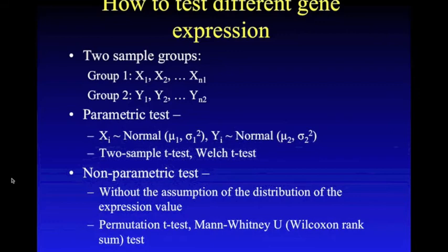After obtaining the microarray data, how can we tell whether two genes' expression levels are different or not? Here, I'll introduce four significance tests that might help solve this problem. Suppose that there are two sample groups, x and y. The tests can be divided into two categories: the parametric tests and the nonparametric tests.